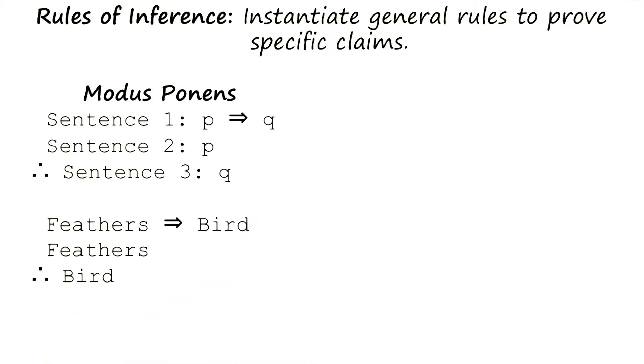Now we can connect this to a logic agent. Imagine that there is a robot, and I bootstrap that robot with the knowledge that feathers imply bird. Now the robot goes to a new region in the country and finds some animal which has feathers. The robot can now conclude that that particular animal is a bird.